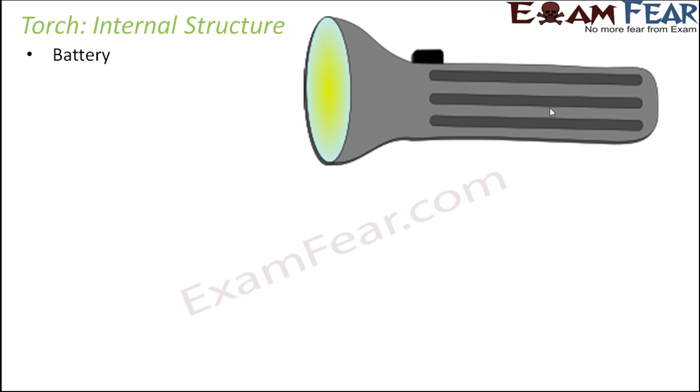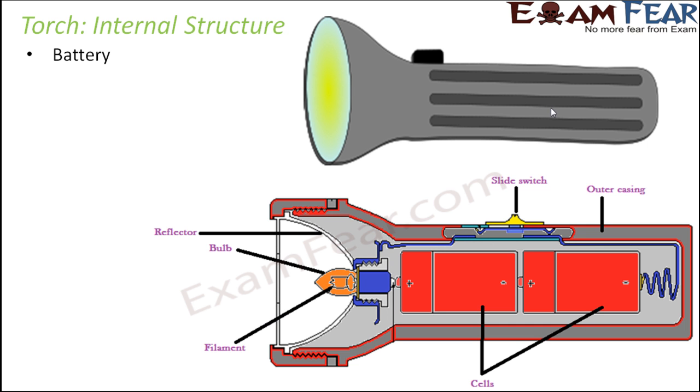From outside, this is how the torch looks like, but when you look at its internal structure, you will see that there are batteries present here. Some torches have two batteries, some have three, depending on the type and the amount of light it provides. Different sizes of batteries are used.